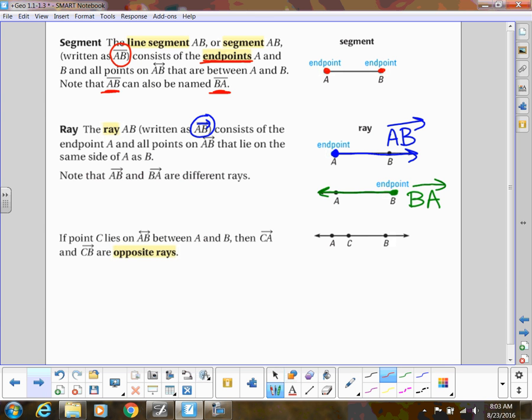And then the other thing that we're going to talk about on this slide is opposite rays. So notice that point C, here's point C, it's on the line AB. It's in between A and B. And then CA, here's the ray CA, it's going to the left. And CB, CB is the ray that's pointing to the right. Those are what we call opposite rays. So notice that opposite rays have to have the same endpoint. And the rays have to be on the same line. They kind of go in opposite directions.